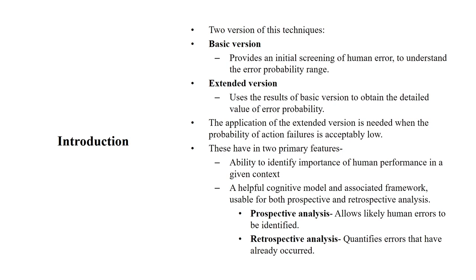CREAM has two primary features: the ability to identify the importance of human performance in a given context, and a helpful cognitive model with an associated framework usable for both prospective and retrospective analysis. In prospective analysis, it allows likely human errors to be identified. In retrospective analysis, it quantifies errors that have already occurred. We can do it after accidents to find what went wrong, or proactively foresee possibilities for error when a system is being designed.